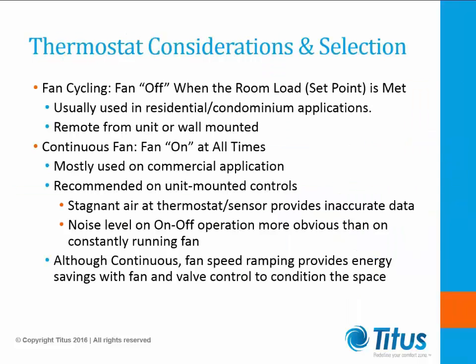Some items to consider when selecting a thermostat to control the fan coil unit: fan cycling — fan off when the room load set point is met — is usually seen in residential or condominium applications. Continuous fan — fan on at all times — is most common in commercial applications. Unit-mounted controls are recommended, as stagnant air at the thermostat sensor provides inaccurate data. Noise level: on-off operation is more obvious than with constantly running fans. Although continuous fan speed ramping provides energy savings with the fan and valve controlled to condition the space.